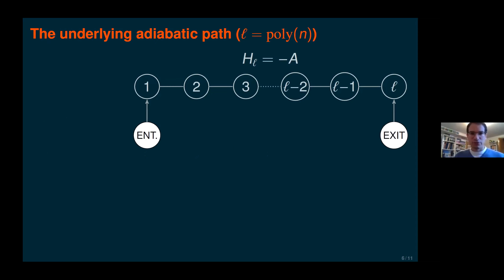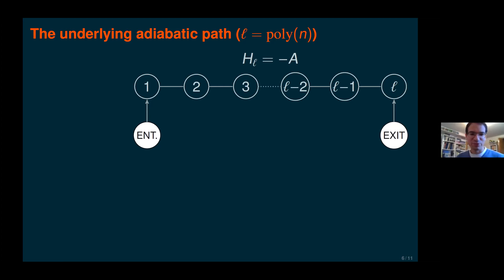We construct this graph with these properties starting from a very simple graph. We first take a path graph of length L, where L is some polynomial in n, and take the Hamiltonian to be minus the adjacency matrix. The entrance is the first vertex and the exit is the last vertex. Obviously it's very simple to find the exit in this graph, but we will make it more difficult.